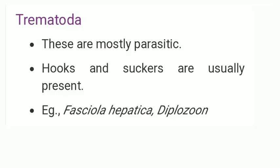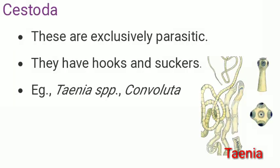Trematoda are mostly parasitic; hooks and suckers are usually present. Examples include Fasciola hepatica and Diplozoon. Cestoda are exclusively parasitic and have hooks and suckers. An example is Taenia solium.